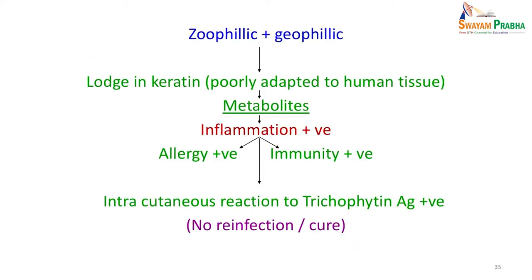For zoophilic and geophilic species, the fungus lodges in keratin and is poorly adapted to human tissue. Metabolites produced in this new environment cause inflammation — the human body does not recognize them as its own and produces a hypersensitivity reaction. If you inject trichophytin antigen intracutaneously it will produce hypersensitivity, which is another way of diagnosing these infections. Since there is strong immunity, the patient may get immune after the reaction and reinfection is usually not seen; these cases can get cured faster.